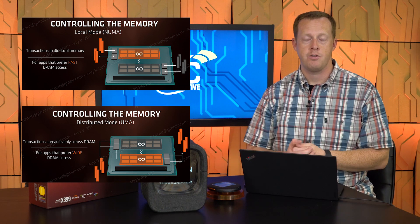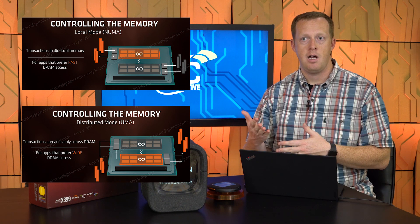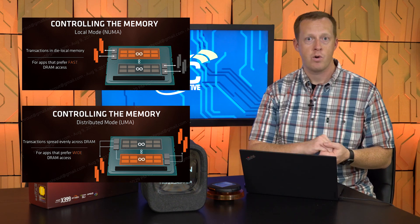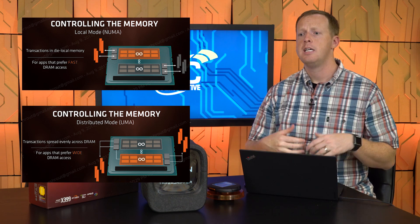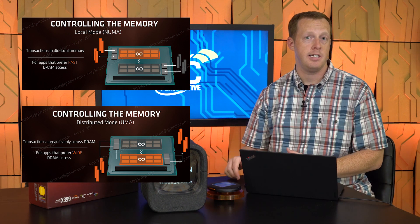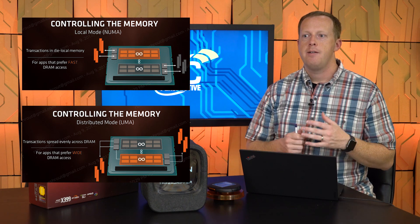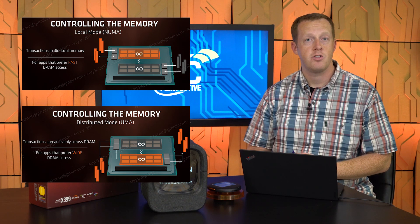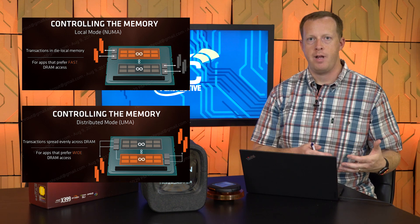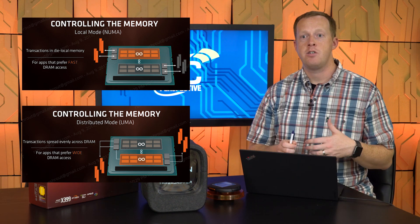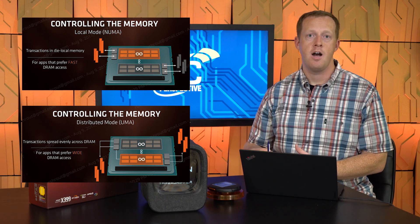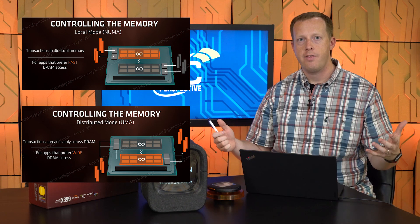All processors and applications access memory accordingly, distributing memory load across all four channels. In local/NUMA mode, Windows boots up as two NUMA nodes — you see one node of 8-core 16-thread and another node of 8-core 16-thread. It accesses memory slightly differently, tending to weight towards the controller attached to the die associated with that node. Different applications are going to perform differently based on these settings, and latency-sensitive applications will likely perform better in NUMA mode if they don't exceed the memory or thread capacity of that node.